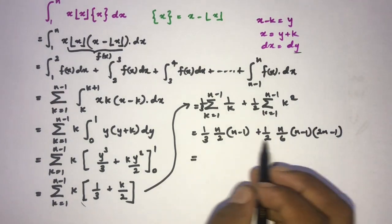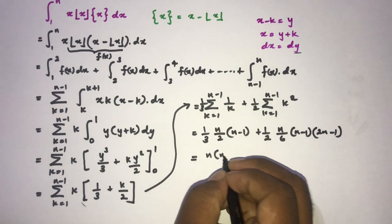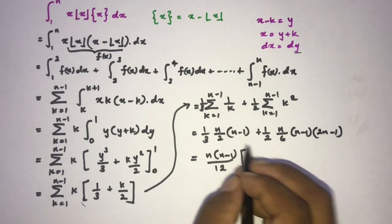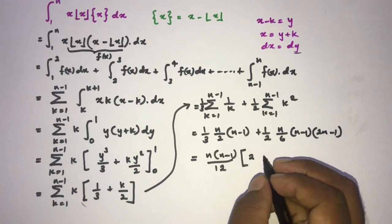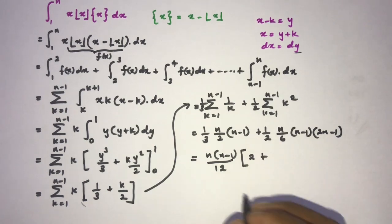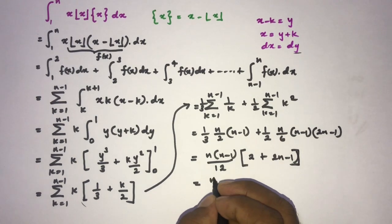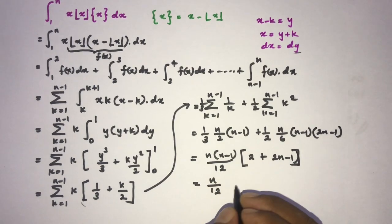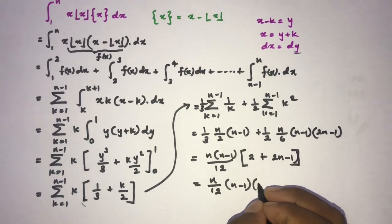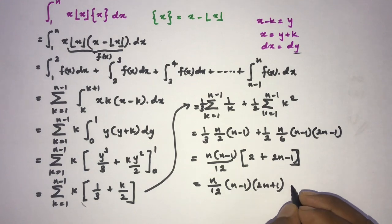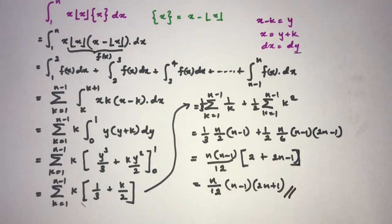Taking n(n-1)/12 as a common factor, we get n(n-1)/12 times (2 plus 2n minus 1), which simplifies to n(n-1)(2n+1)/12. This is our final answer. Now instead of n, you can plug in 2021 to get the answer to the original question. If you like my videos, please subscribe to this channel. Thank you for watching.